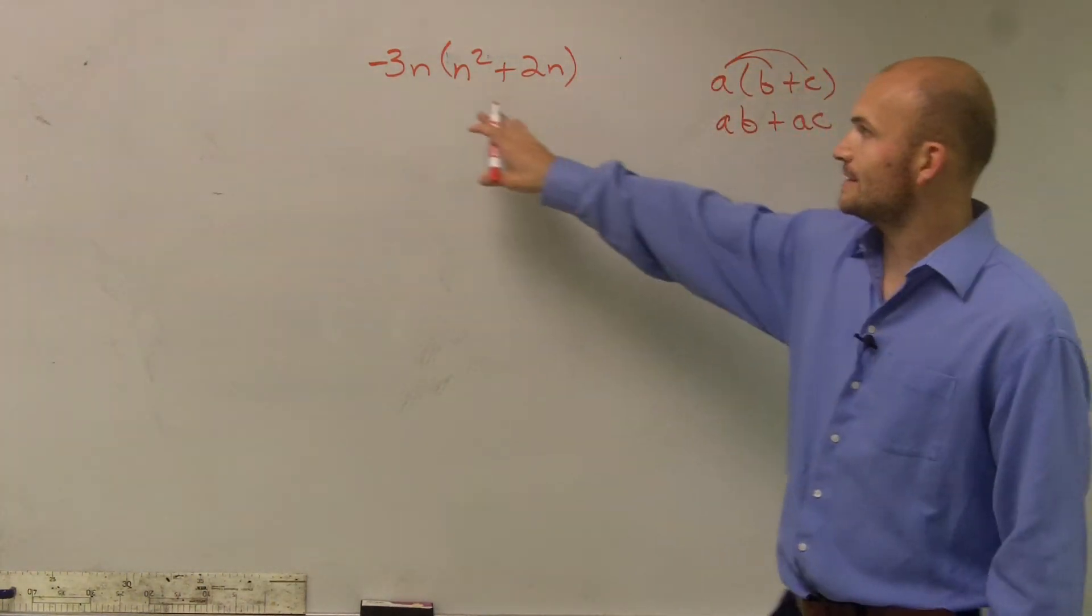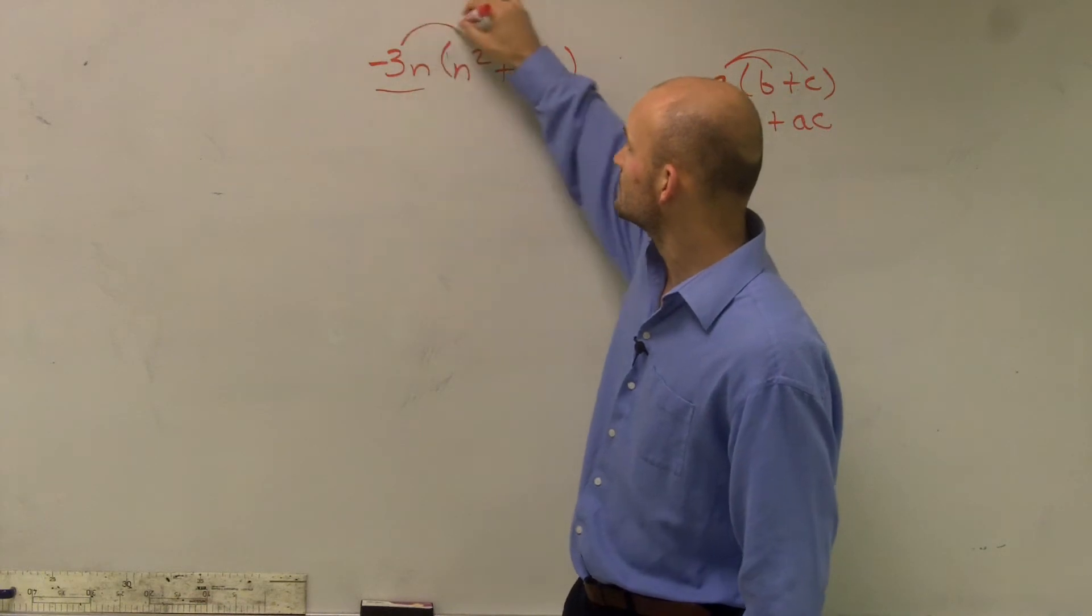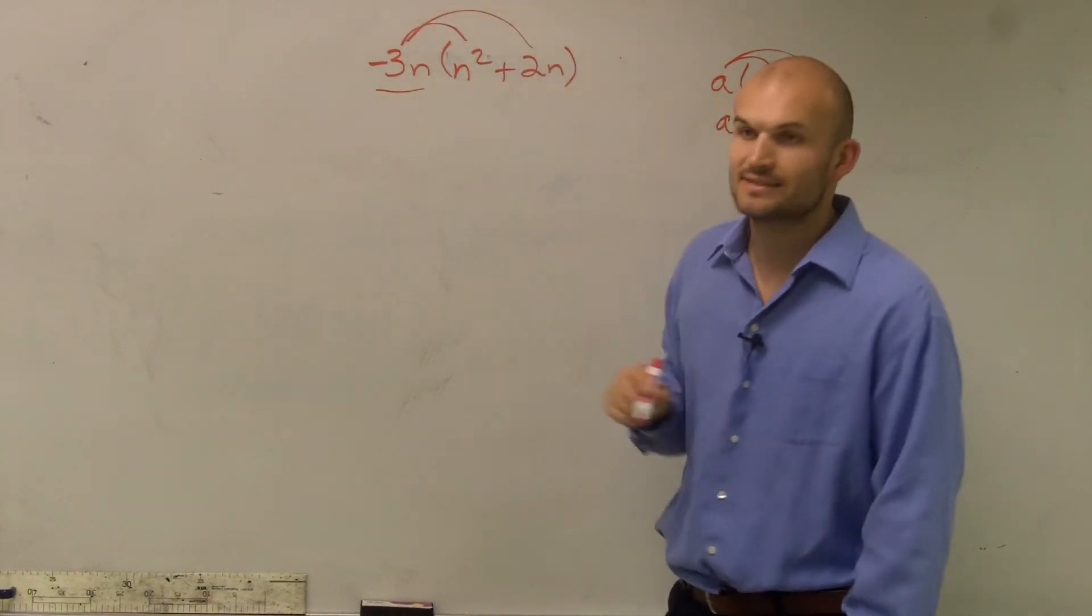So when I'm looking at this, I notice that I'm going to have to multiply this 3n times n squared and times 2n.